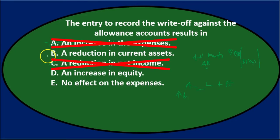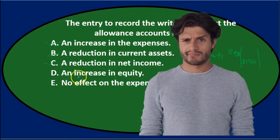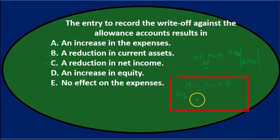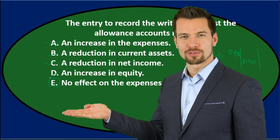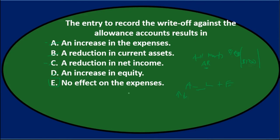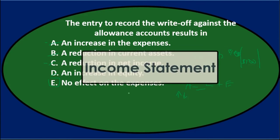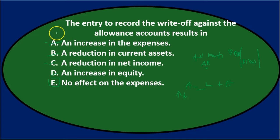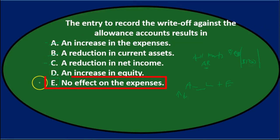C says reduction in net income — there's no effect on net income. Note that A, an increase in expenses, and C, a reduction in net income, seem similar because recording bad debt expense would increase expenses and reduce net income. Since they cannot both be correct, they effectively cancel each other out. D, an increase in equity — there's no effect on equity either. So E, no effect on expenses, is the correct answer. When we write off bad debt using the allowance method, nothing is recorded to the income statement.